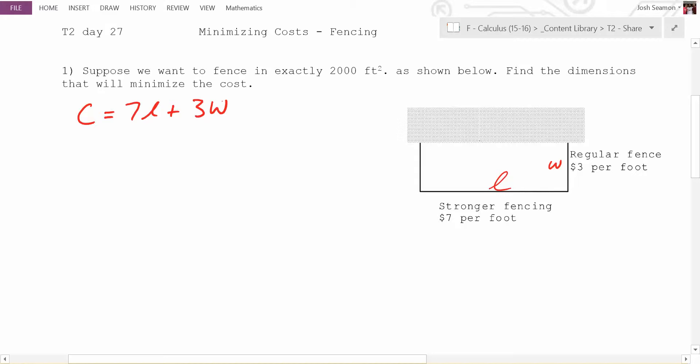That's very close. What's missing, Liana? 2 times 3W. Because how many Ws do you have? Two of them. So it's going to be really 3 times 2W. Do you see that, everybody? Does that make sense? So we have our cost is equal to 7L plus 6W.